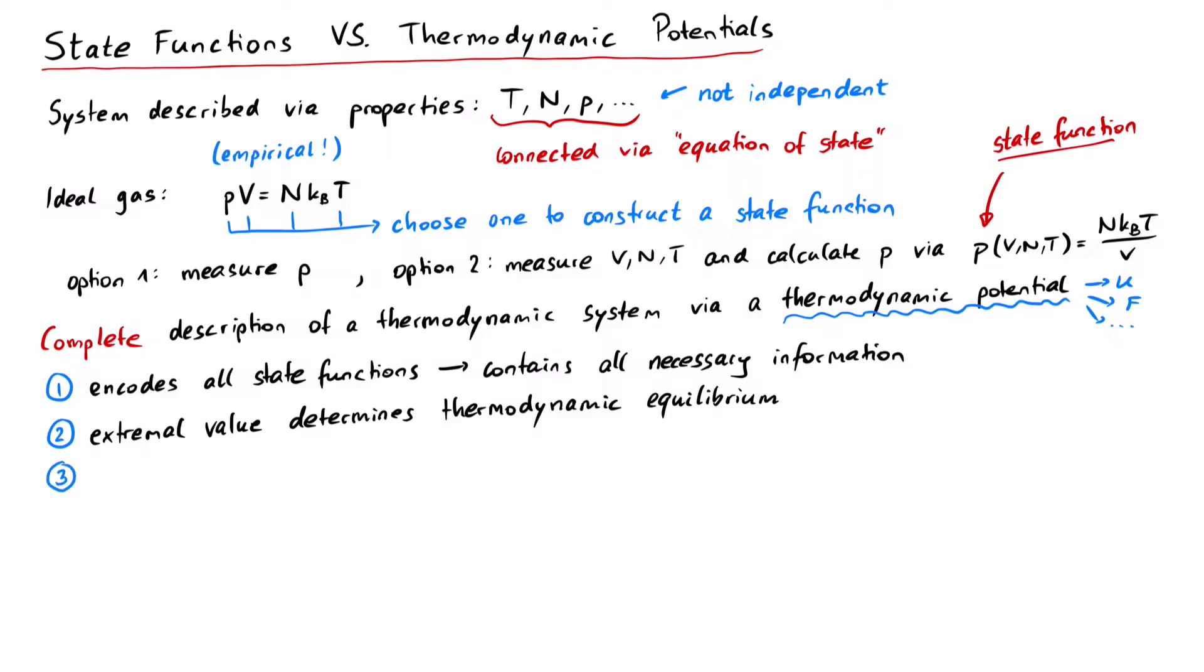By taking the derivative of a thermodynamic potential with respect to one of its natural variables, while keeping the others constant, we get an equation of state.